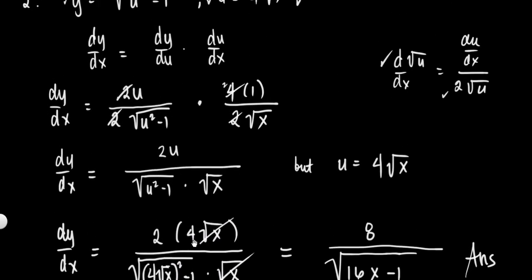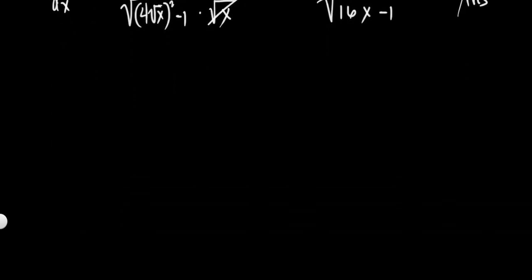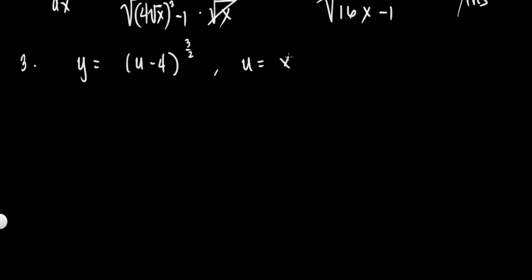Example number 3: y is equal to u minus 4 raised to 3 halves, and u is equal to x squared plus 4. Find dy over dx by using the chain rule.